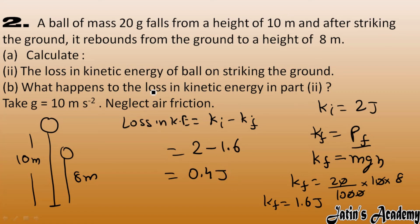Now the question arises — where does this 0.4 joule of lost energy go? When the ball strikes the ground, some energy is converted into heat and some into sound. So the 0.4 joule appears as heat and sound energy.